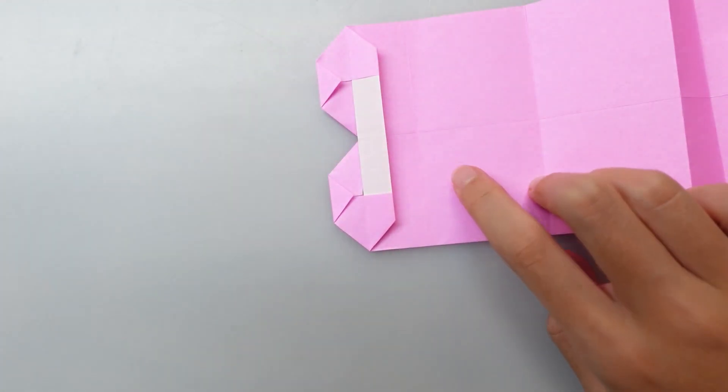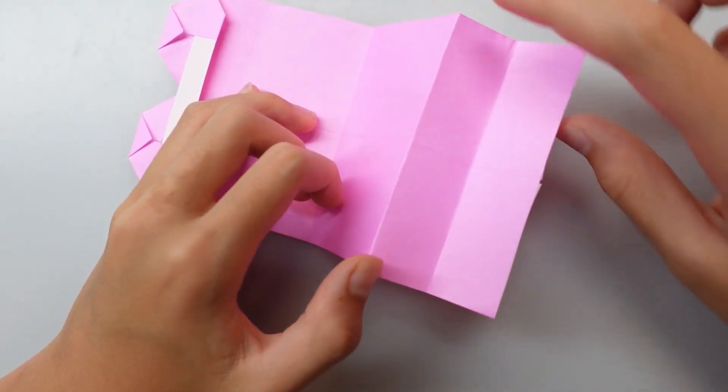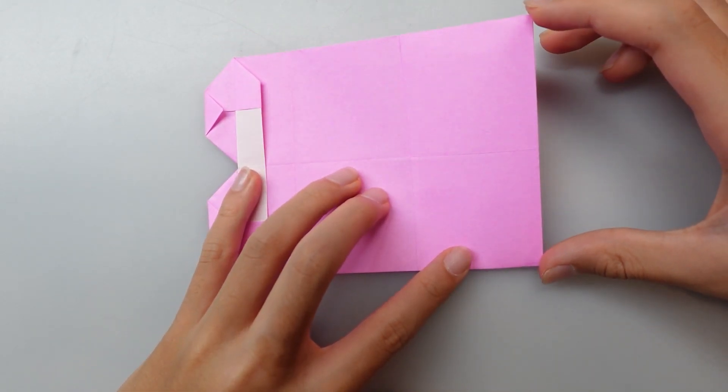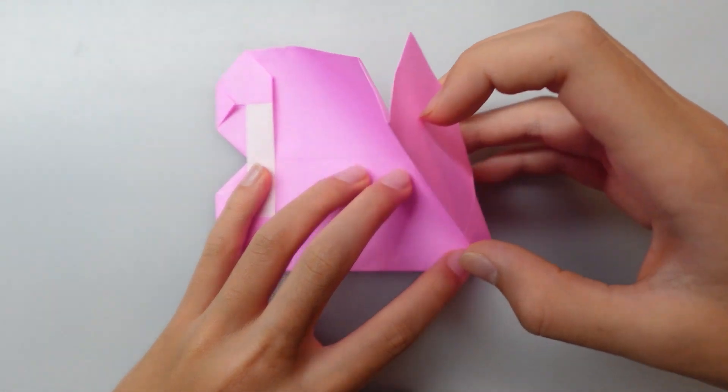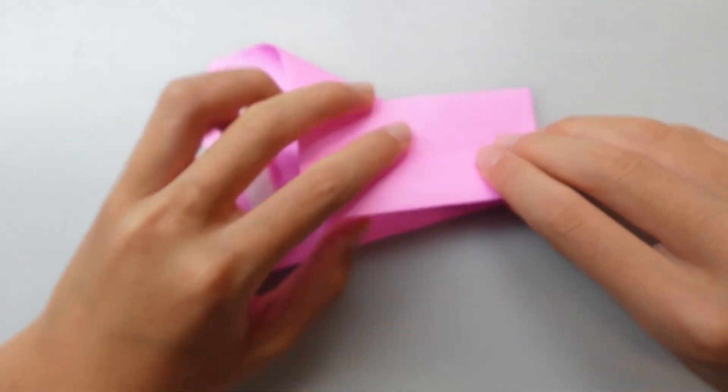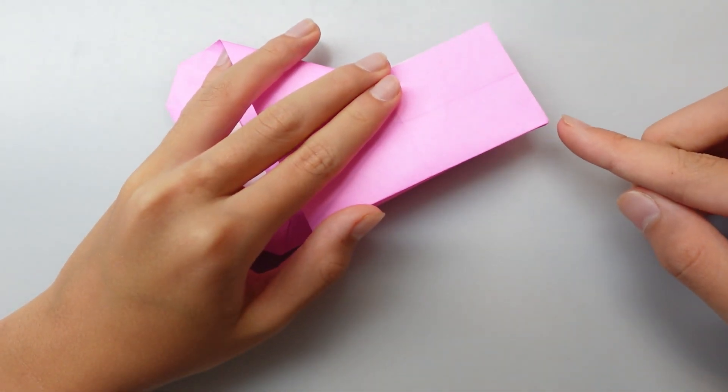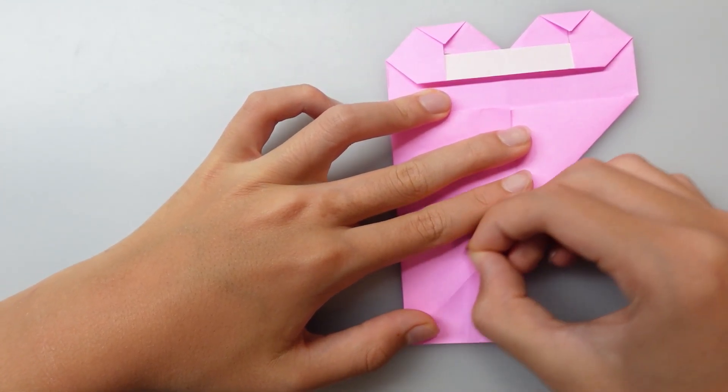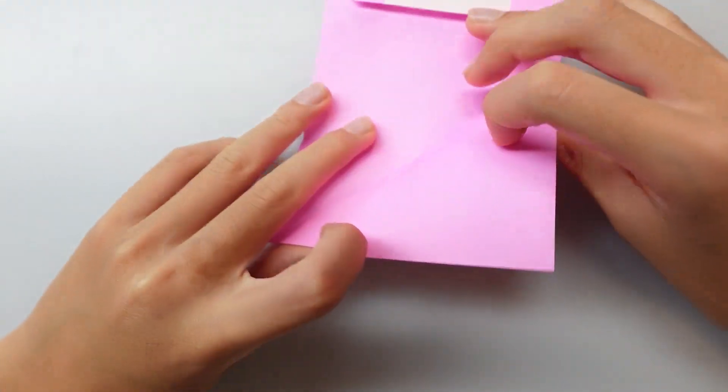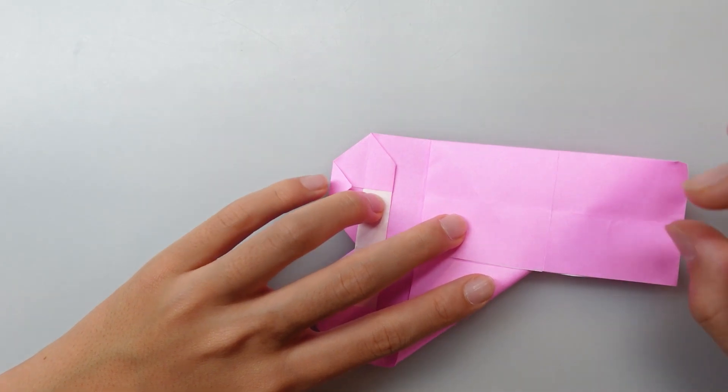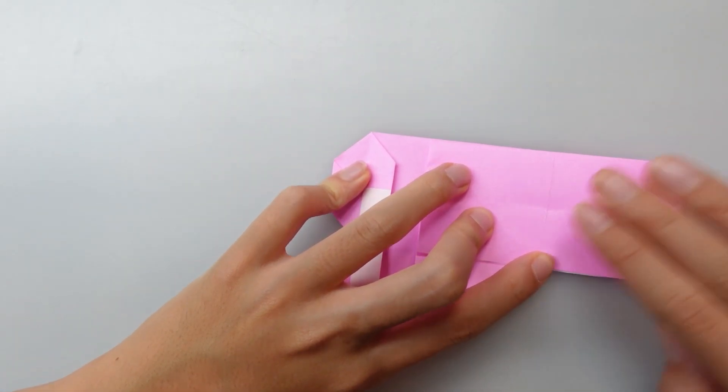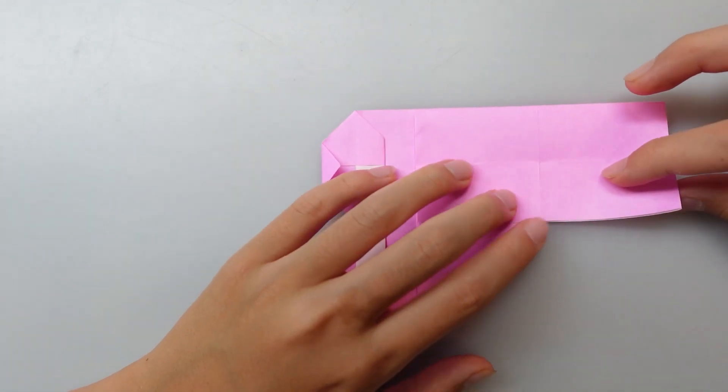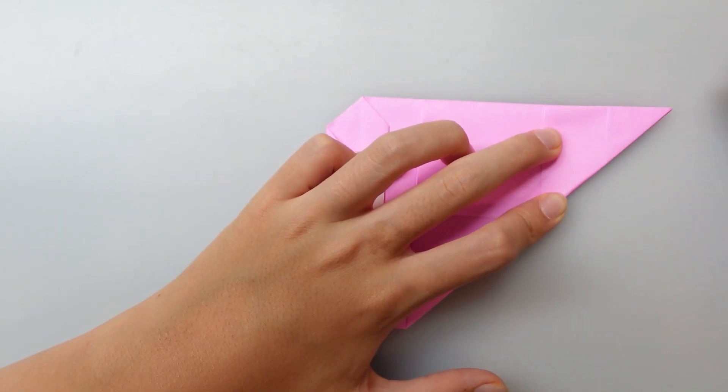Now we can turn this over and fold this flap behind just like that. And now bring this edge to this edge, releasing the paper behind. Try not to tear this corner. Unfold. And do the same thing on this side. And let's make the airplane fold right here.